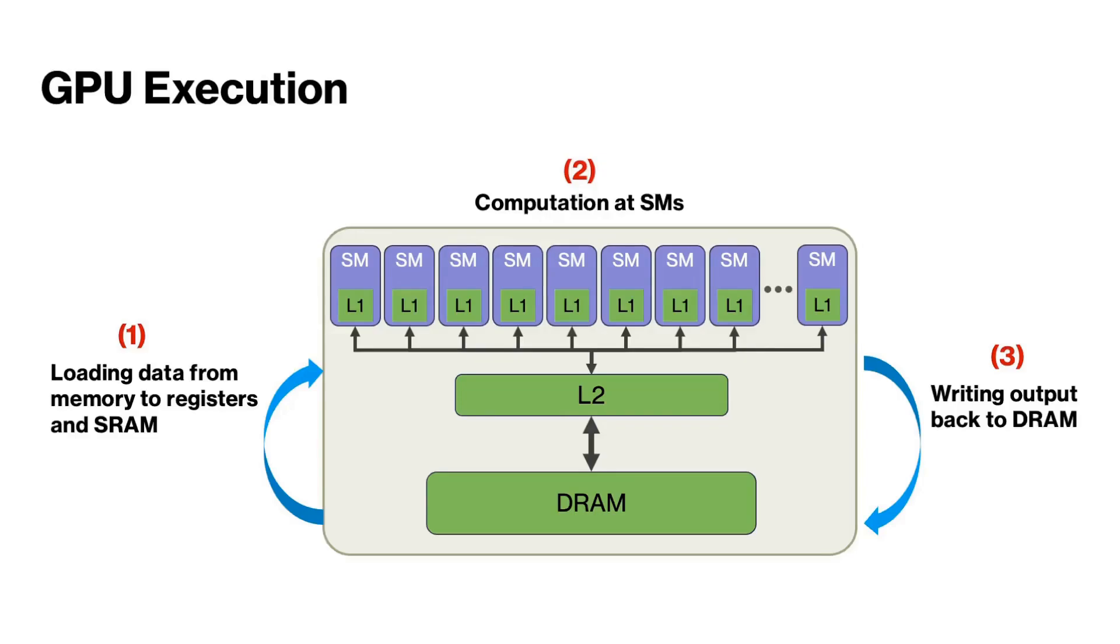For computing a mathematical function on a vector or matrix data, we have to load chunks of data from DRAM to SRAM, and then the SMs will execute the computation with multiple threads in parallel. Once the computation is finished, the results are stored back in the DRAM. So this execution model requires accessing the DRAM twice, once for reading the data and then again for storing the results.